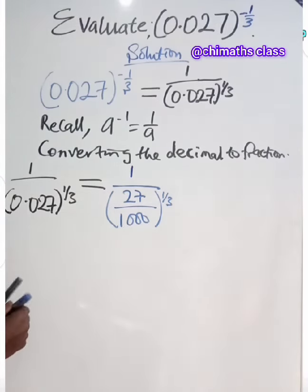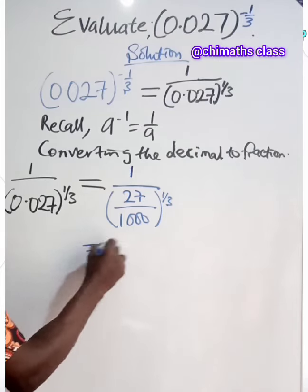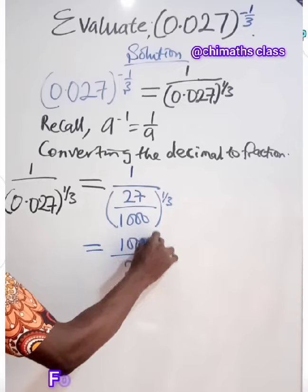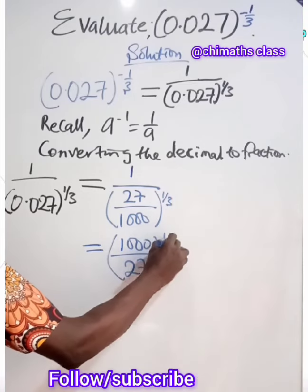Let's invert this. If we invert this, we'll have 1,000 divided by 27, all raised to the power 1 over 3.